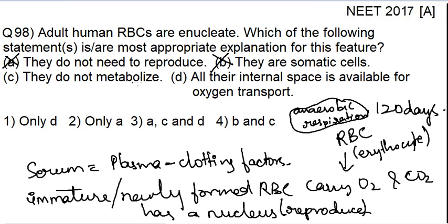Option three — they do not metabolize — is also incorrect. They do metabolize. If they did not metabolize, from where would they get ATP, the energy currency of the cell? How would the RBC perform its duty of carrying oxygen and carbon dioxide? So, they do metabolize and this is not the correct option. The fourth option — all their internal space is available for oxygen transport — makes sense. This is the correct option.